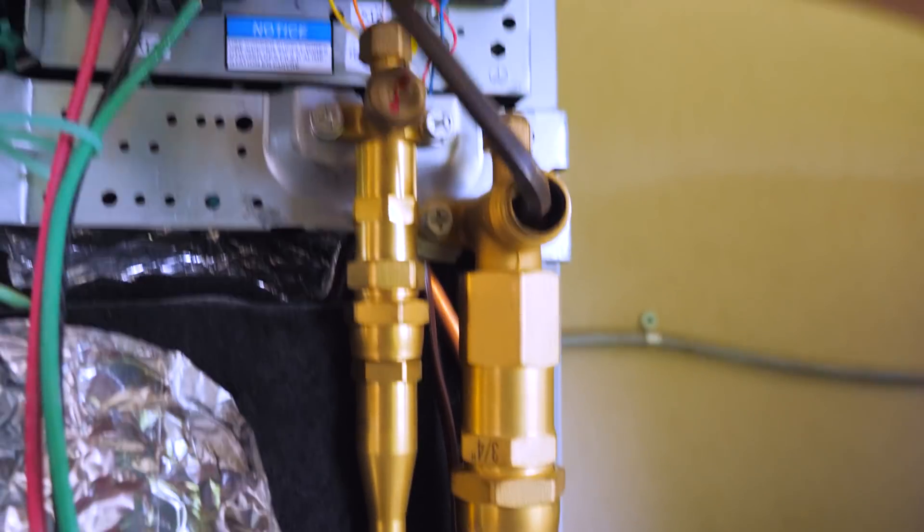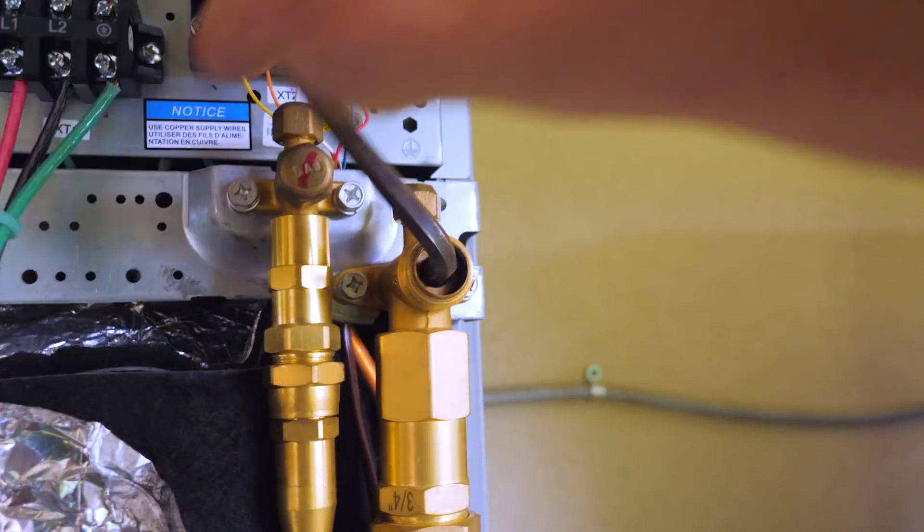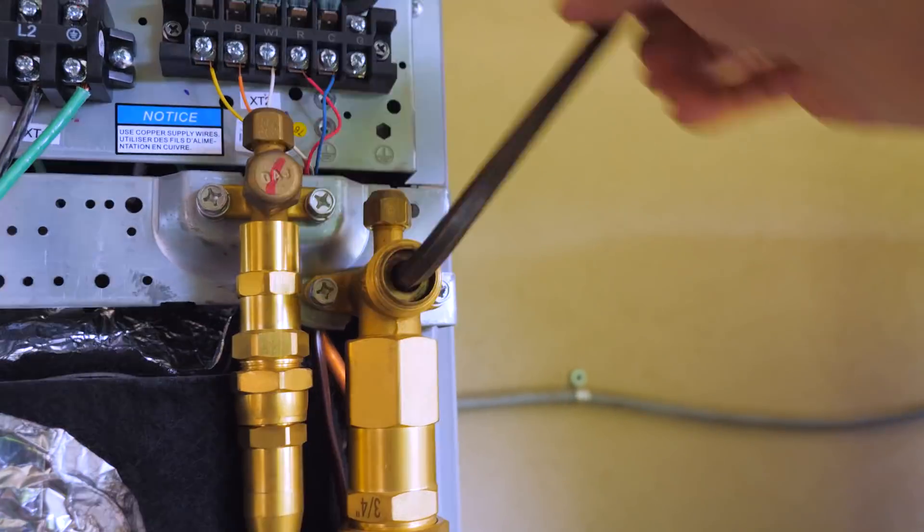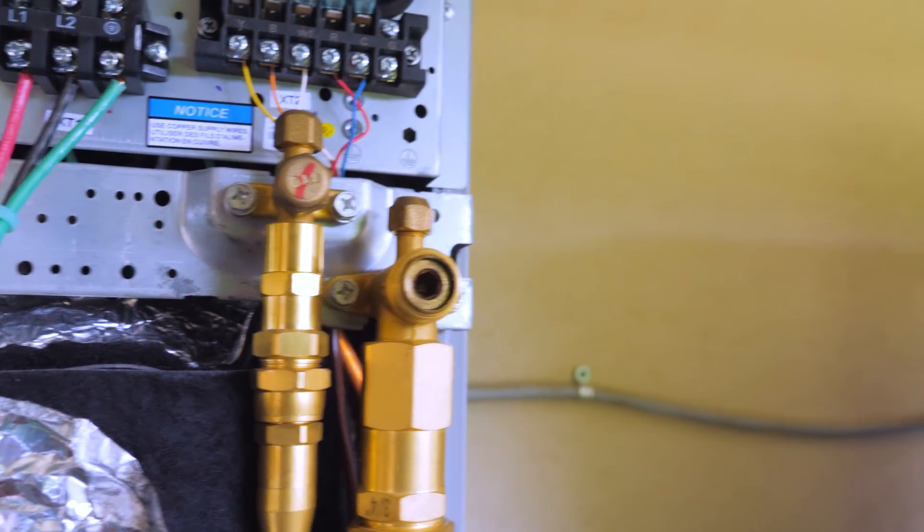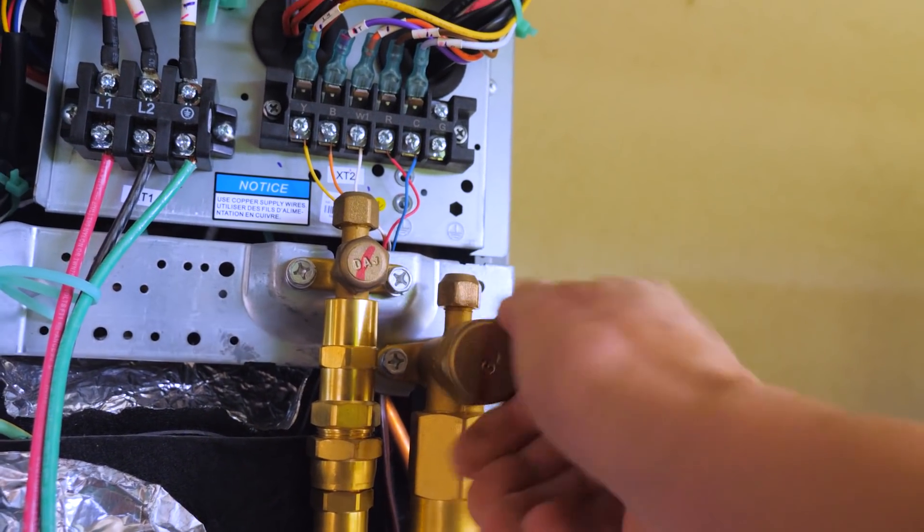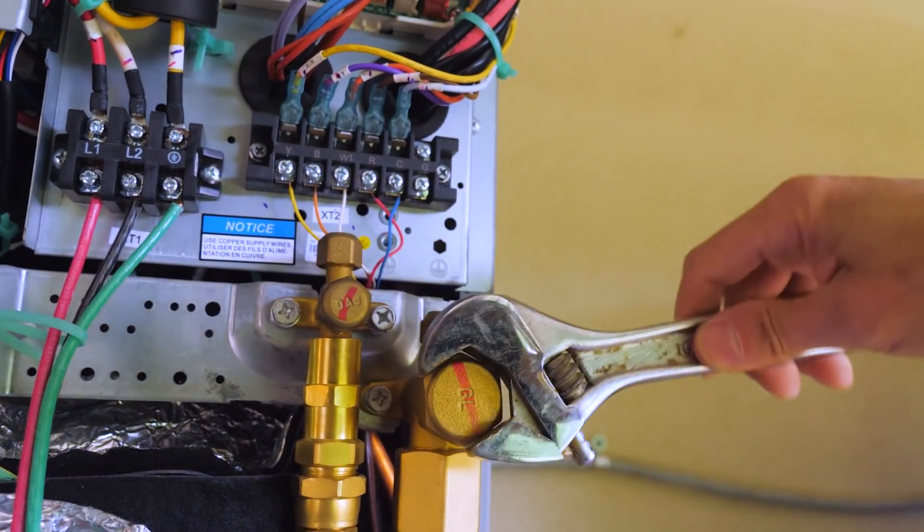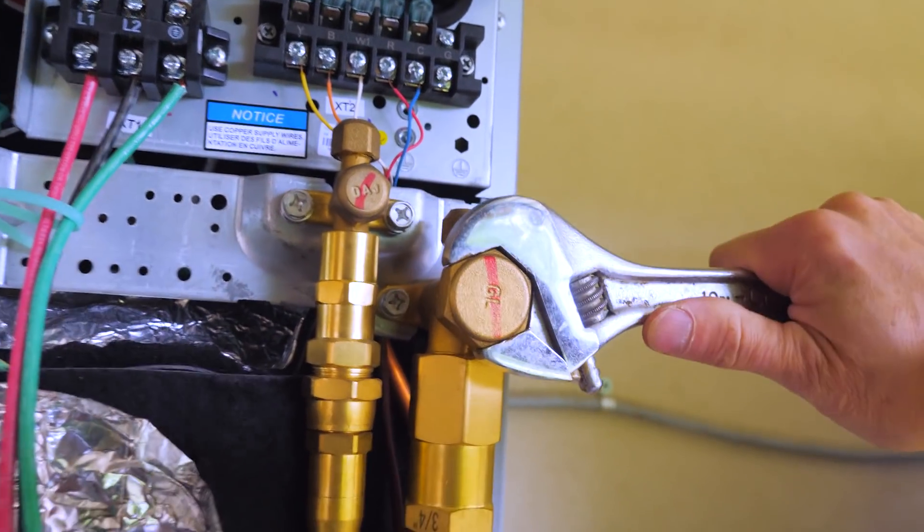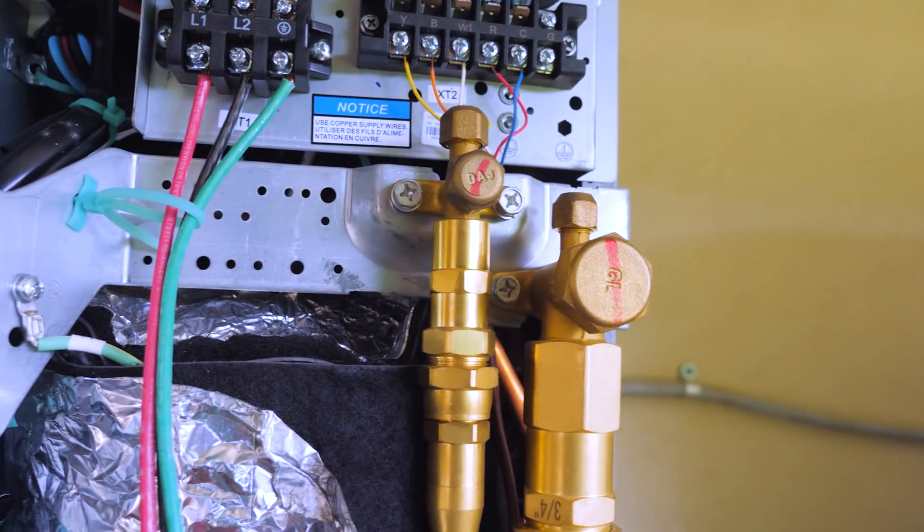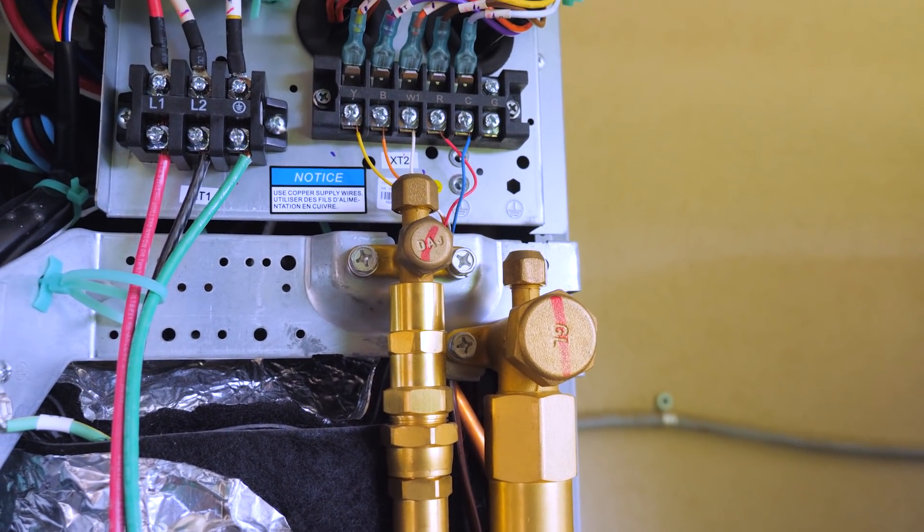There's a hex valve in there. Now you turn this to the left and fully open it. Turn it until it stops. And then put the cap back on. That's all there is to it. Now I'm going to do the other unit and go inside and do the air handlers.